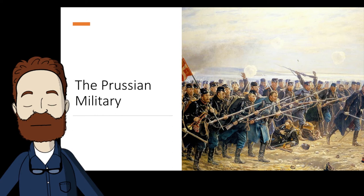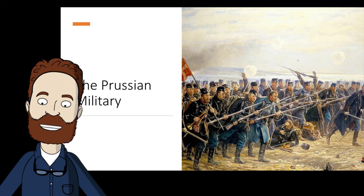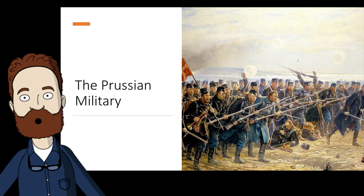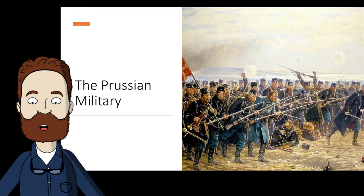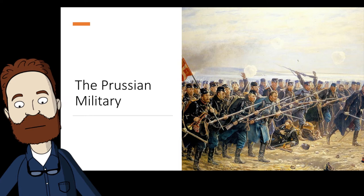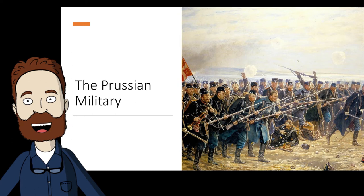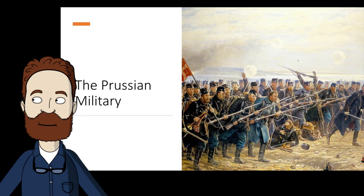In 1740, Frederick inherited a standing army of 83,000 men; when he died, he had turned it into an army of nearly 200,000. Under him, it remained a force of peasants and numerous foreign recruits, obtained often by outright kidnapping. The Prussian military was almost wholly recruited from the countryside. The real function of townsmen was to pay for it through their taxes and not to serve in it.